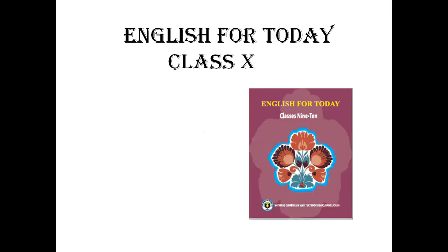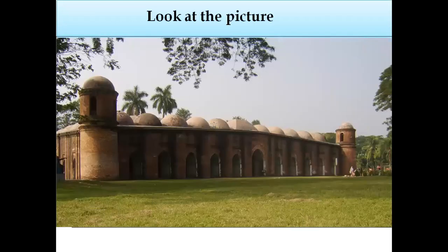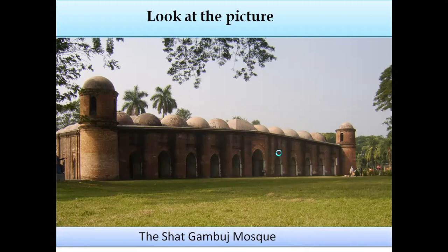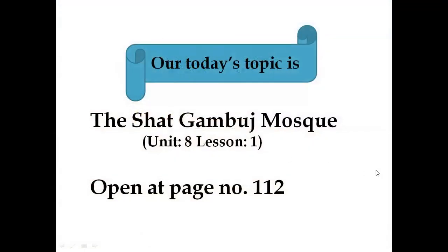Today my class is on English First Paper for students of Class 10. Here is the picture from your EFT book. At first, look at the picture — I think most of you are familiar with it. This is a picture of a mosque, but this is not a usual mosque. You can see several rooms at the top of the roof, and there are several doorways. This is a beautiful, interesting place of Bangladesh. Can you tell me the name of this place? Yes, it is the Shatgombuj Mosque. So our today's topic is the Shatgombuj Mosque.